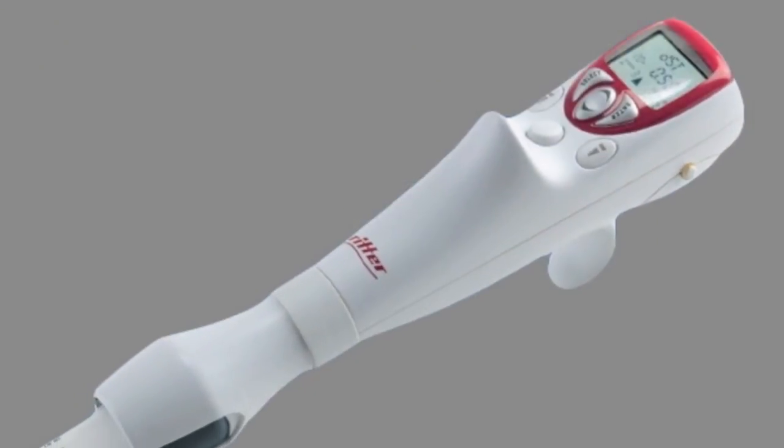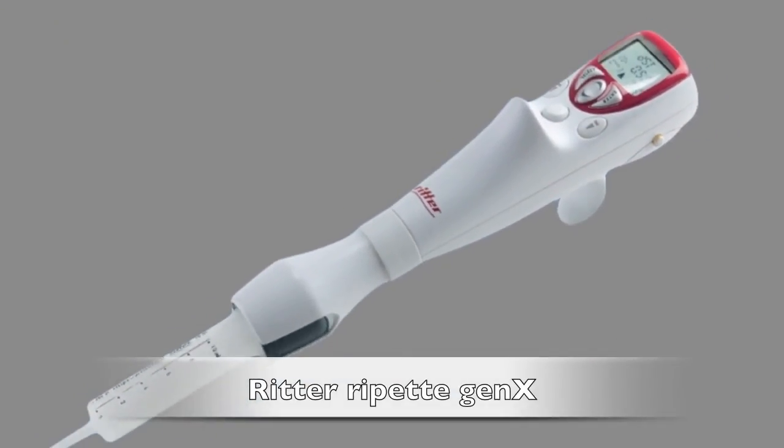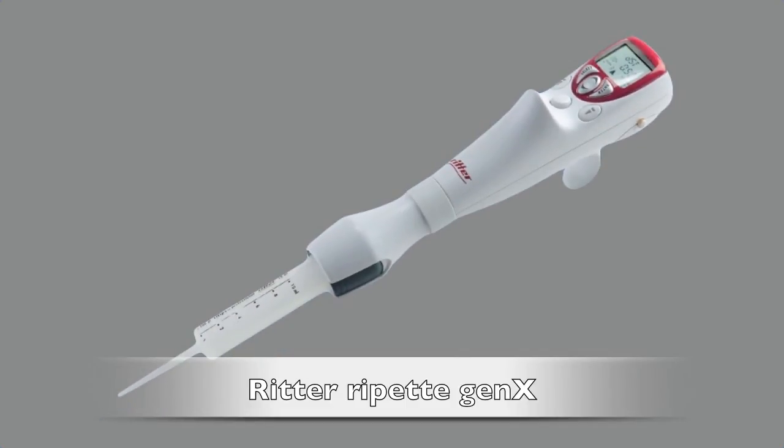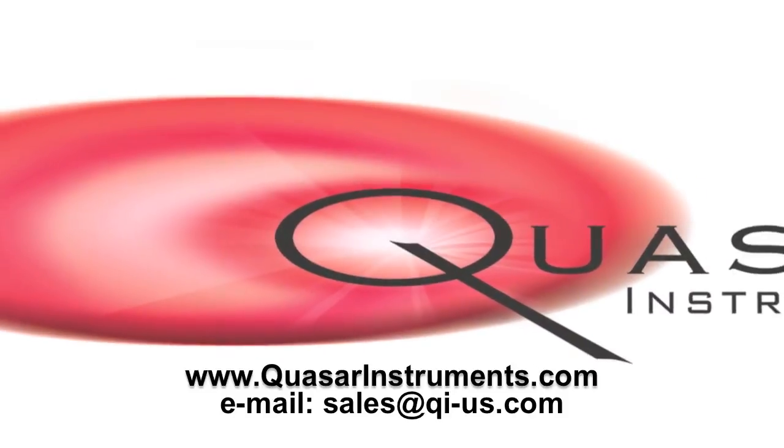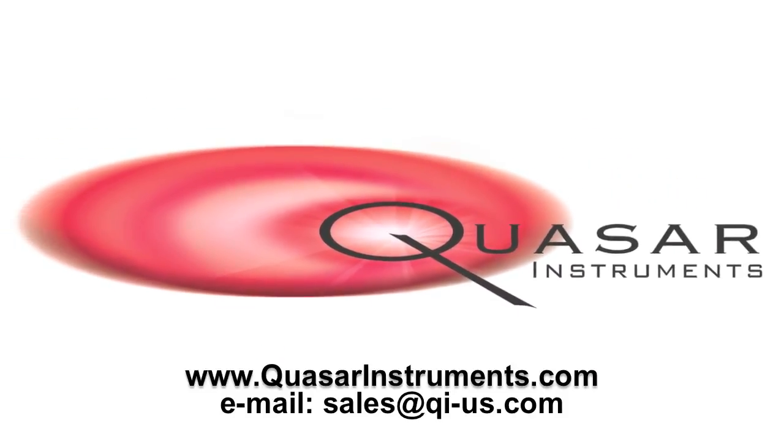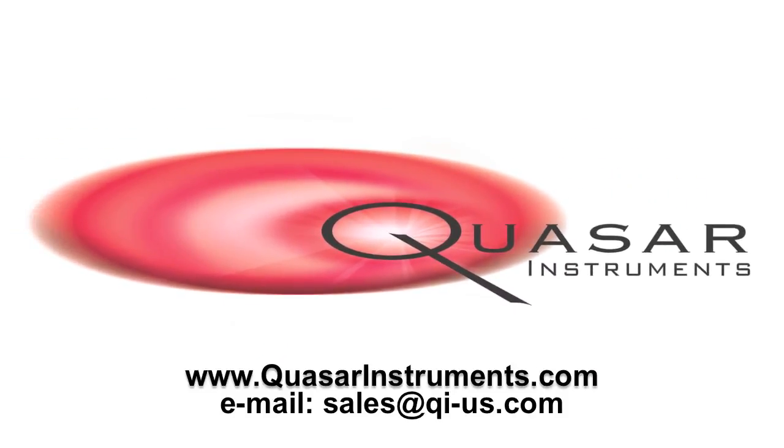Along with the large volume range, the Ritter Repet Gen X is also ideal for viscous or volatile samples. If you need more information, please visit our website at www.quasarinstruments.com. Thank you.